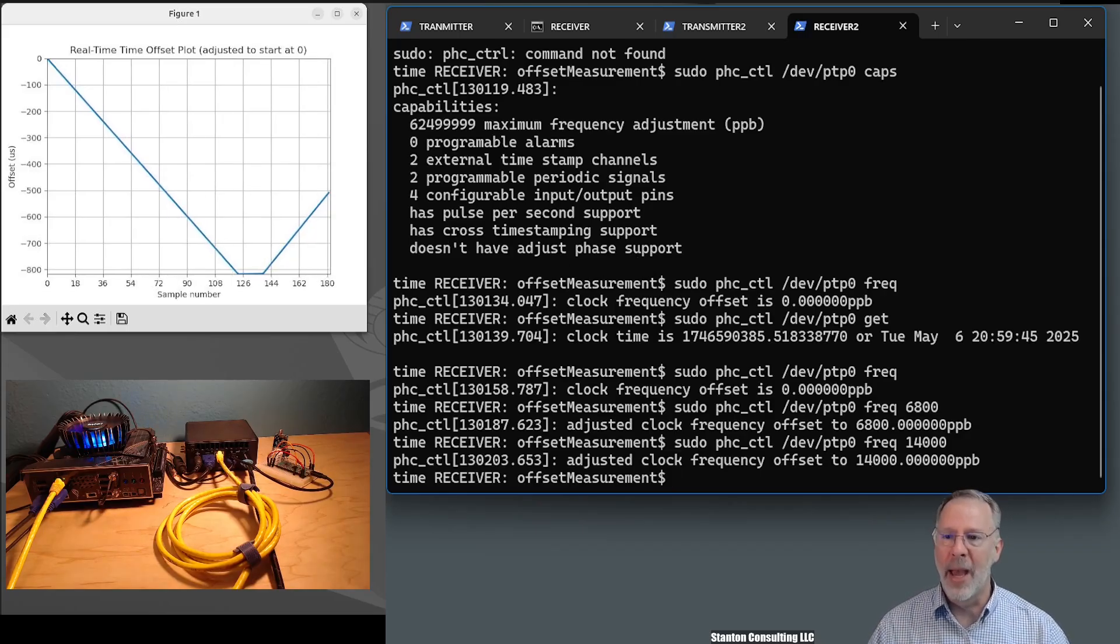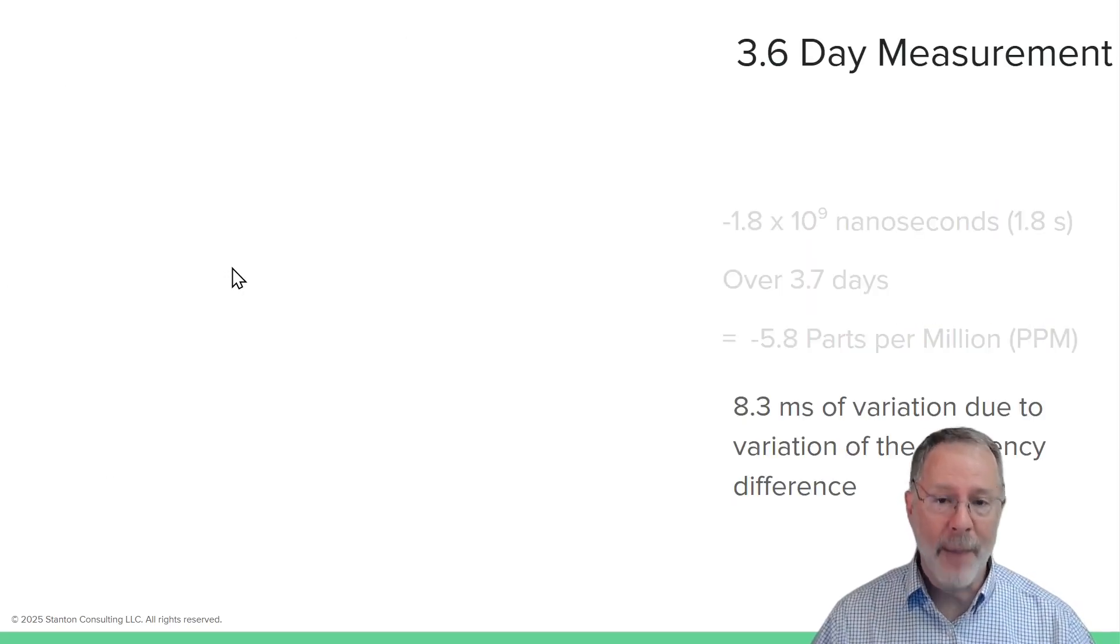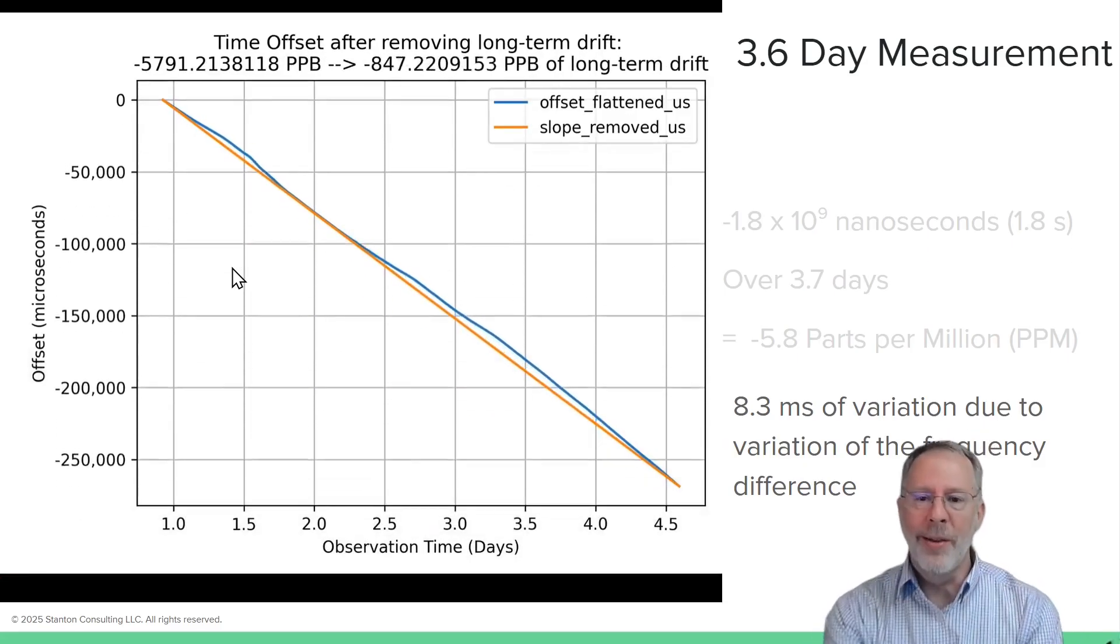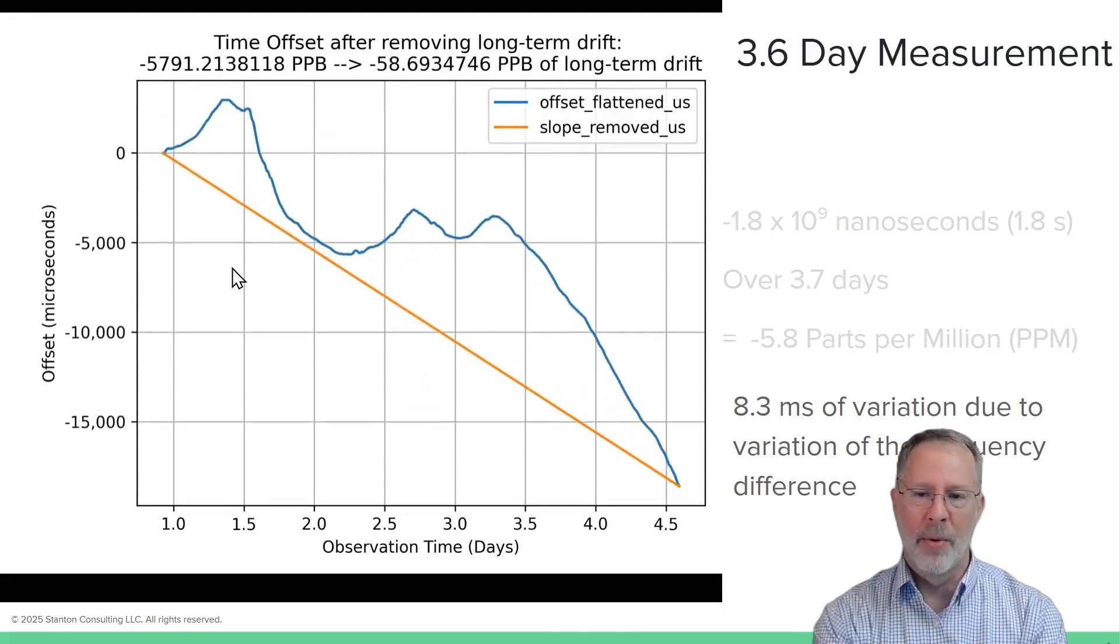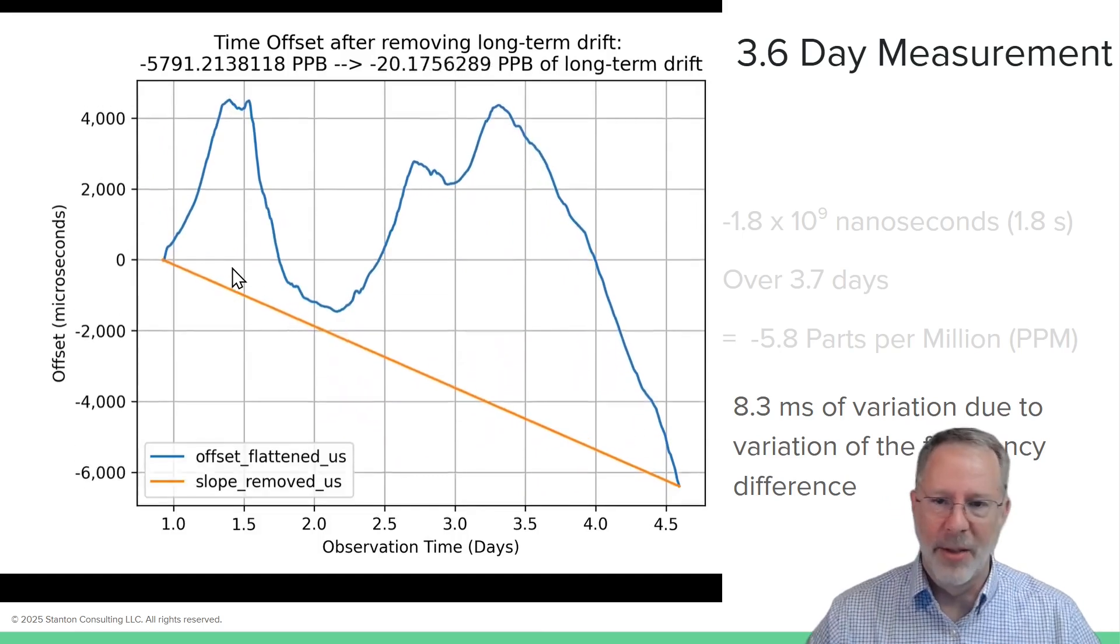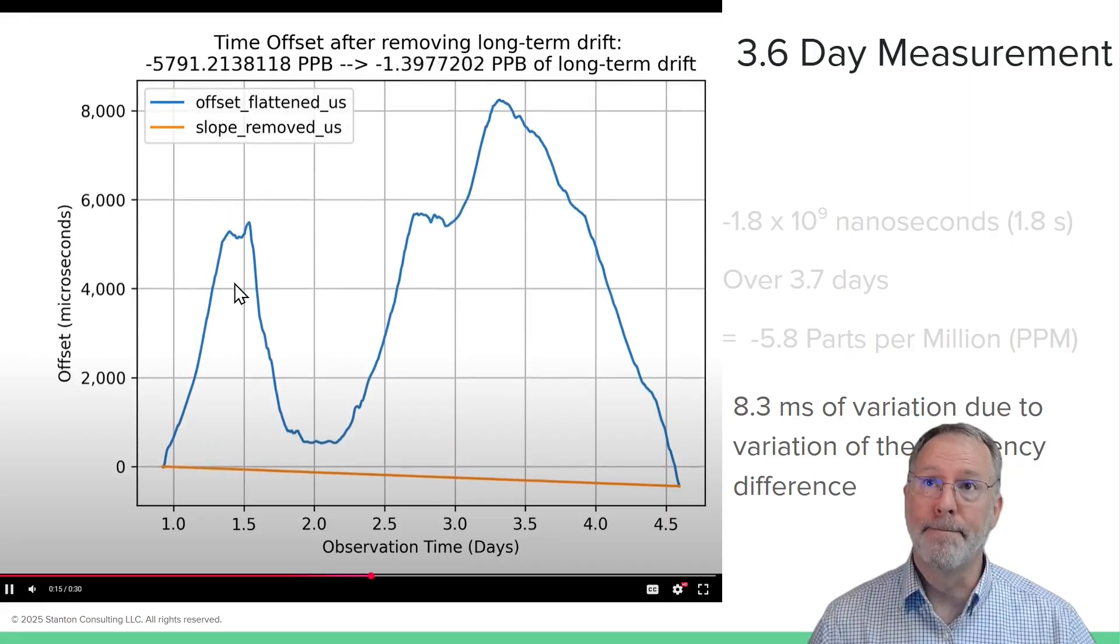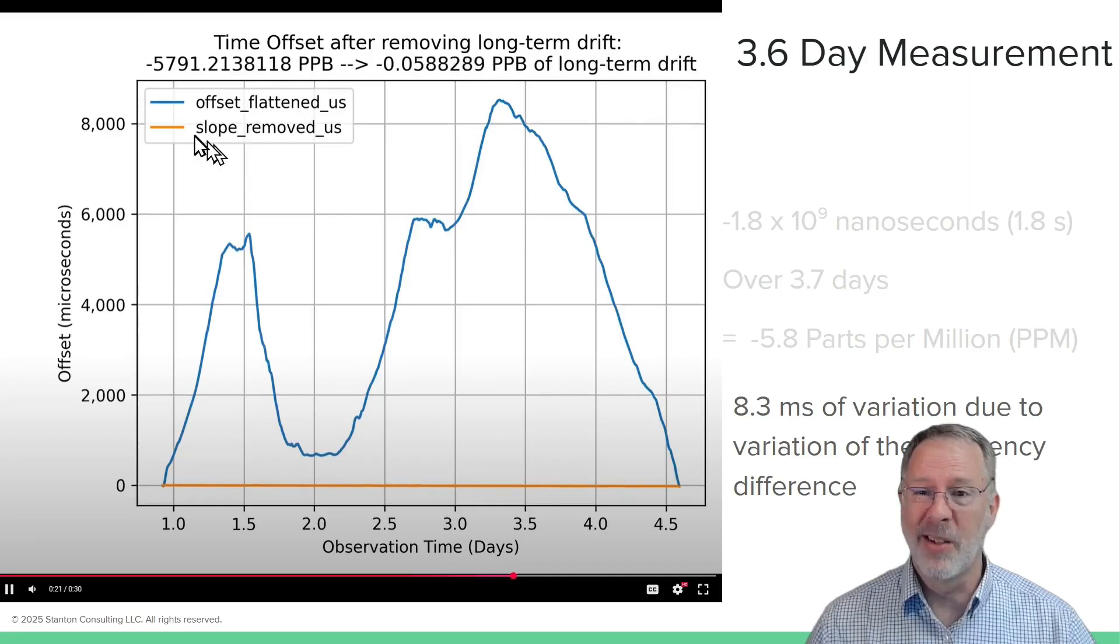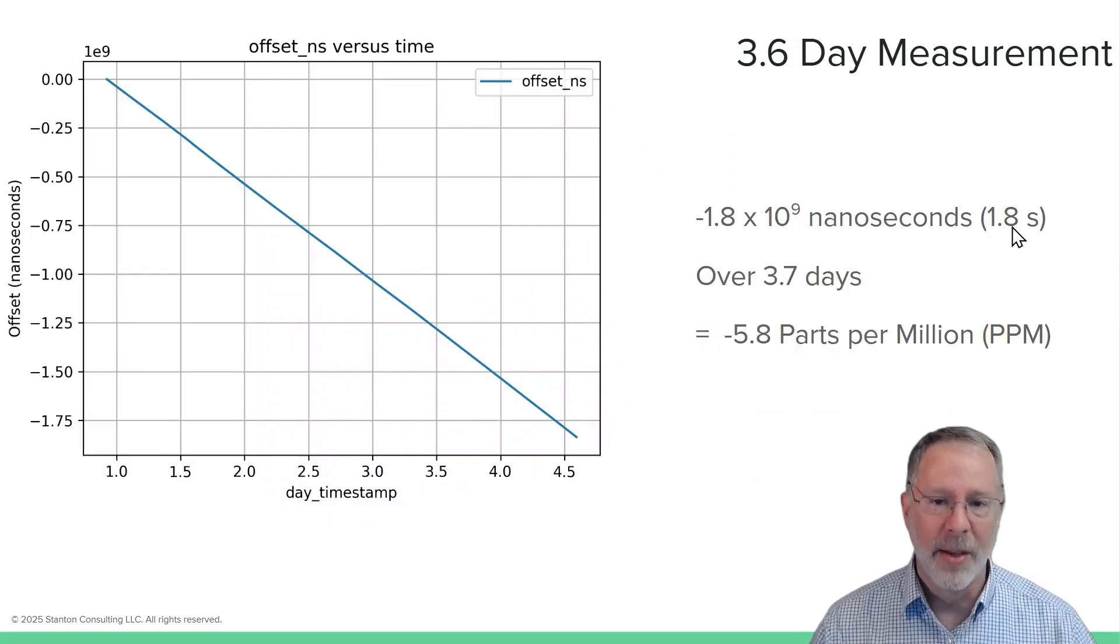So those are all the knobs that we have. Let's go look at some data. So I captured this particular set of data over what you can see is about three and a half days. It starts just before one because of the time of day I started, and I wanted to correlate the temperature with the frequency. So there we go. There's the offset in 8.3 milliseconds of variation beyond the 1.8 seconds of variation that was caused by the frequency drift.